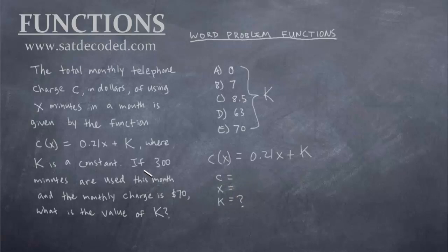But let's take a look at c and x and see if we can figure out what values those are. The question says if 300 minutes are used. Well up here it says of using x minutes. So we know that x is being replaced by 300. So we can go ahead and write down x = 300. What that means is wherever we see the x, we're going to replace it with 300. So now we have c(300) = 0.21 times 300 + k.